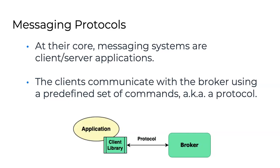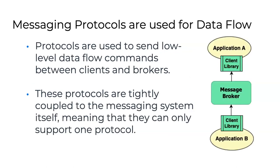Every messaging system has its own unique implementation, and this necessitates that each messaging broker requires its own client library that speaks that protocol — knowing how to send the low-level commands to publish and receive data. So they become tightly coupled to one another. They have to use the same protocol, and oftentimes even the same version — you can't mix version 2.1 with 2.5. This leads to a proliferation of messaging systems, each with their own client libraries.